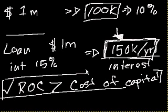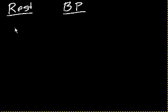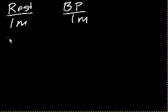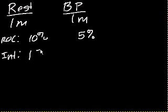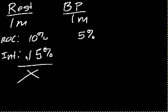Going back to our two options: the restaurant has an ROC of 10% and the beauty parlor has an ROC of 5%. The restaurant looks better superficially. But the cost of capital — the interest rate to borrow money for the restaurant — is 15%, so it's not a good investment because the cost of capital is higher than the return on capital.